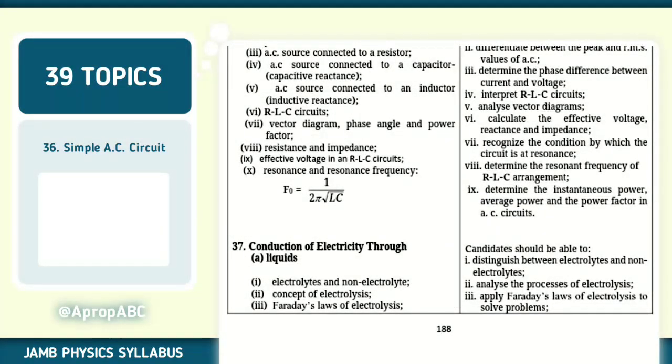Number 36 of 39, simple AC circuits. AC voltage or current, peak and RMS values. AC source connected to resistor. Impedance, RLC circuits. Check the objectives as well.